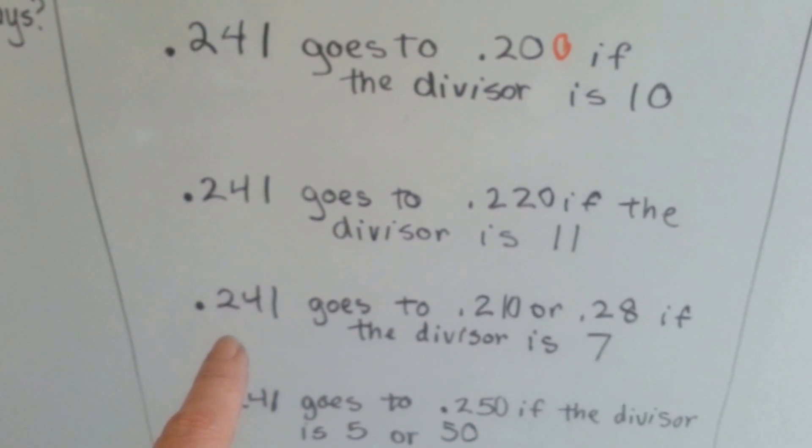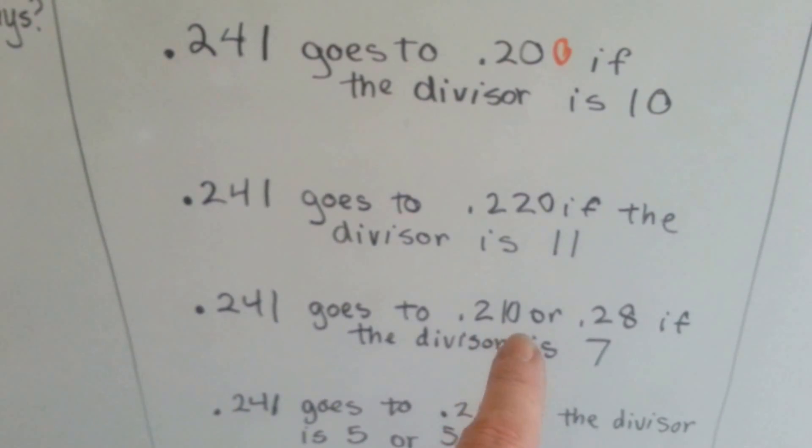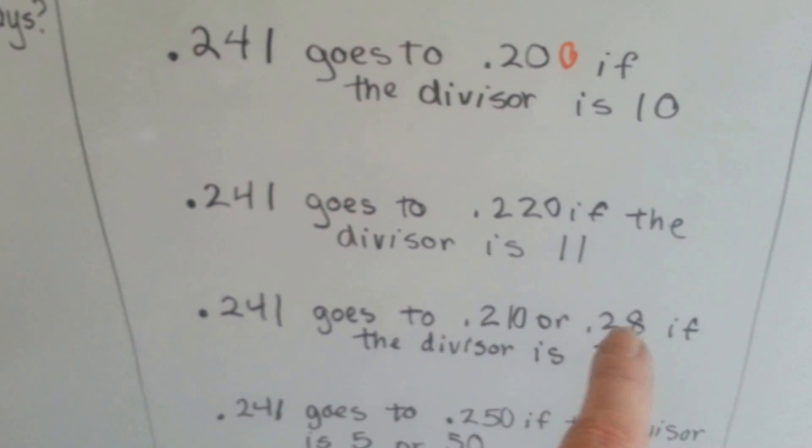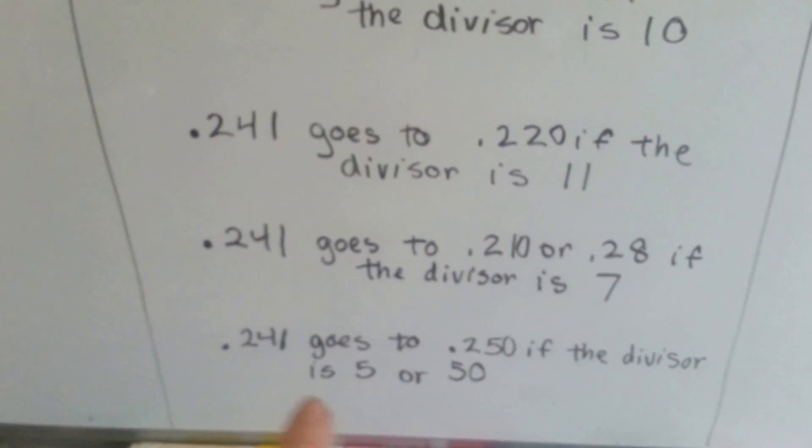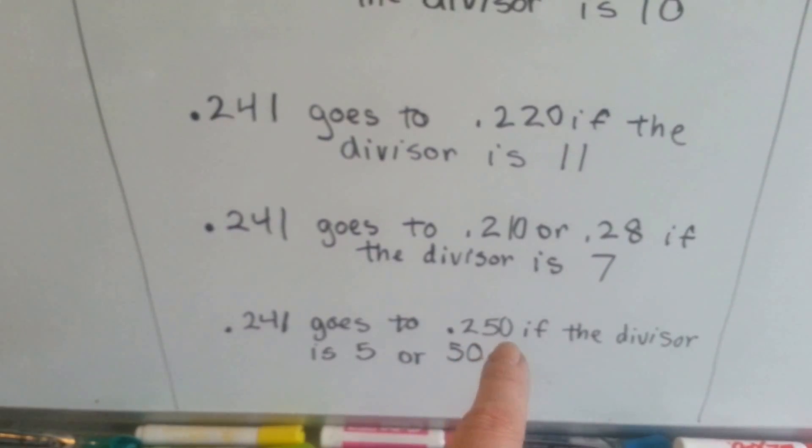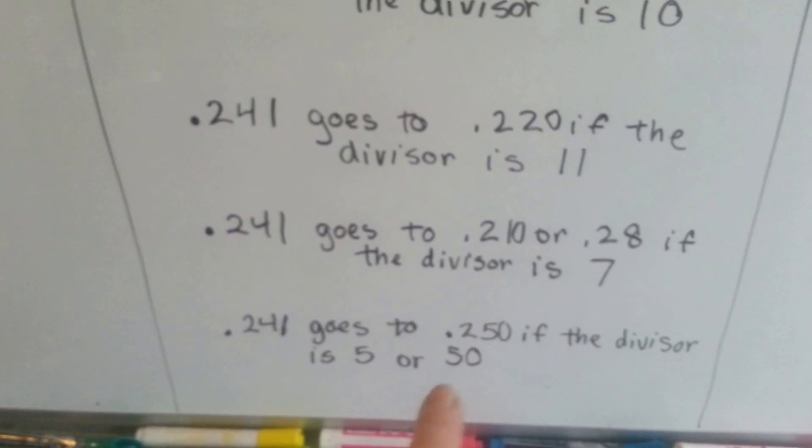If it was 241 thousandths, we could go to 210 thousandths or 28 hundredths because 7 is compatible to them. If it was 241 thousandths, we could round it to 250 thousandths if our divisor was 5 or 50 because that would be more compatible with 250. So see, it depends on the divisor, alright?